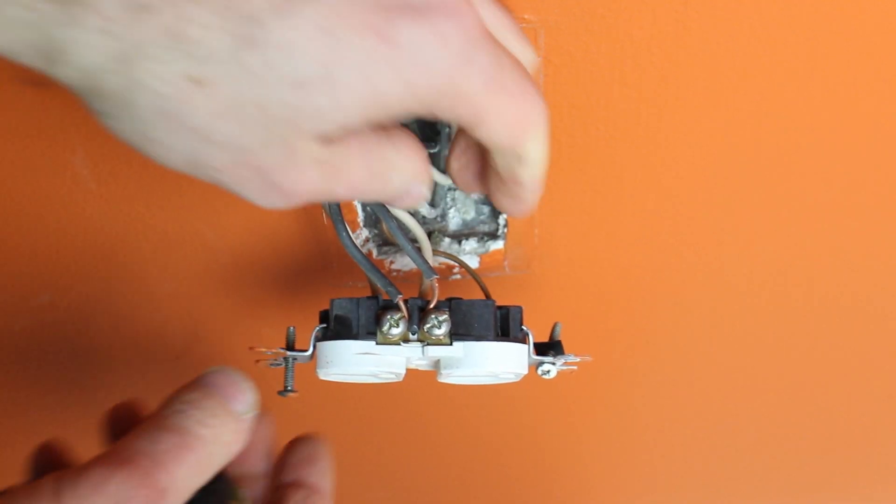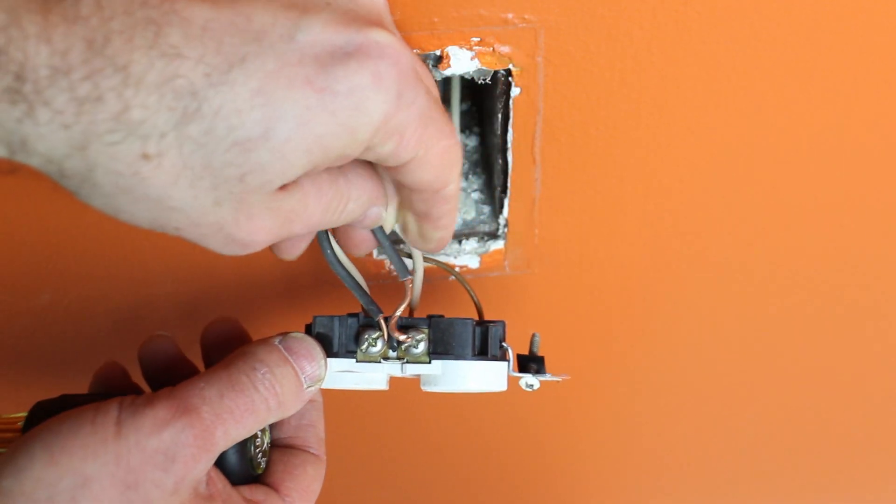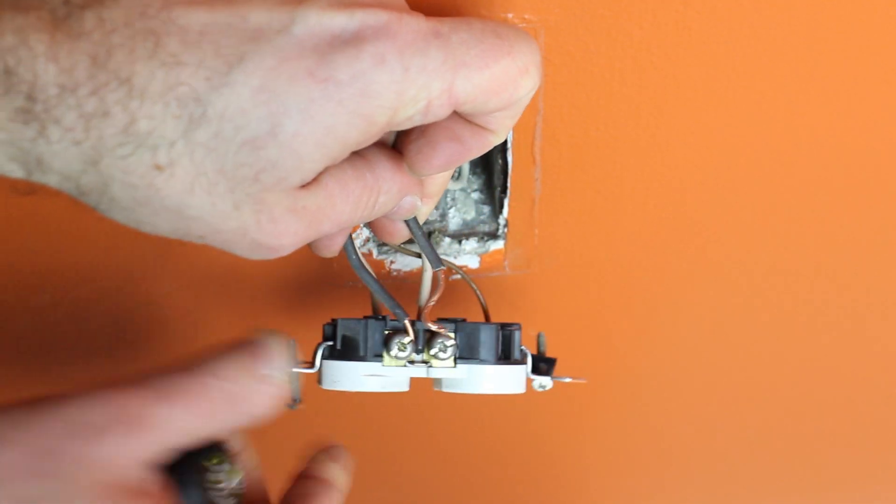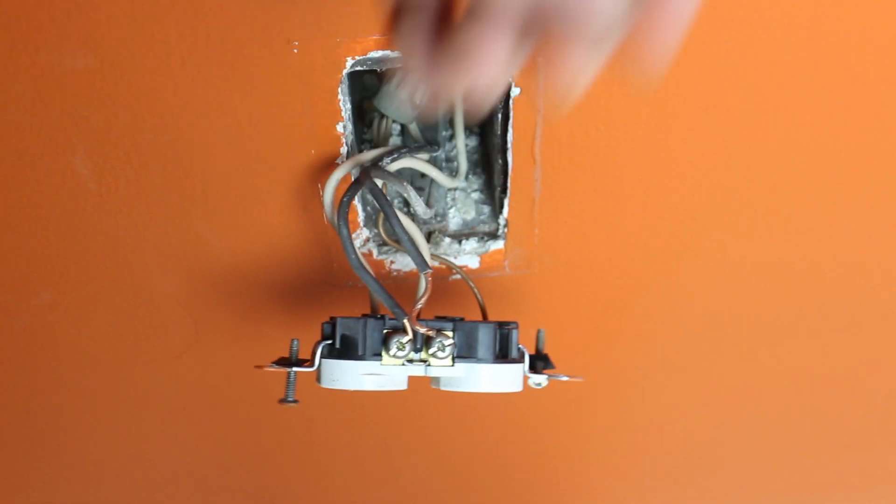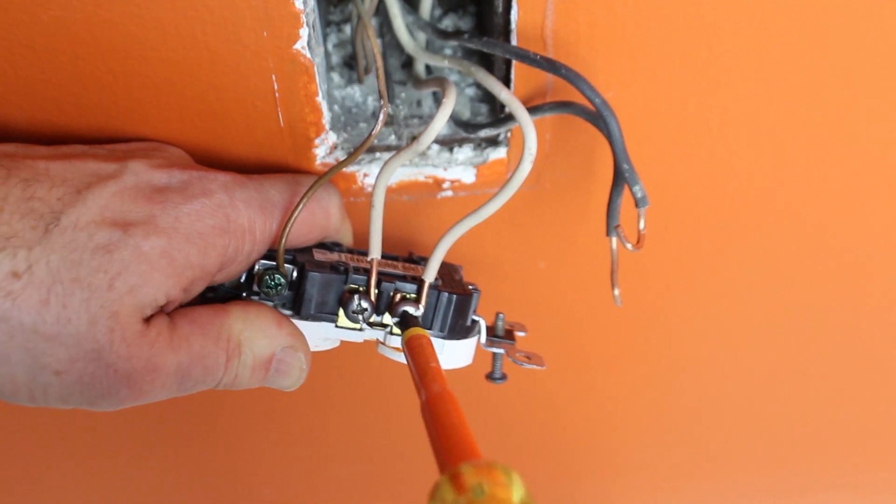So what you need to do first is unwire the hot wires. Here I wanted to show you something. The loop—the wire loop isn't properly looped. And that's dangerous because the hot wire could have came off the terminal screw.